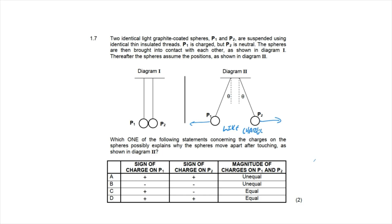When two objects are brought into contact, charge sharing occurs: the new charge on each equals the sum of both charges divided by two. This means both spheres have the same polarity and the same magnitude. Therefore only options C or D are candidates, and option D is the only one showing like charges with equal magnitudes, making option D the correct answer.